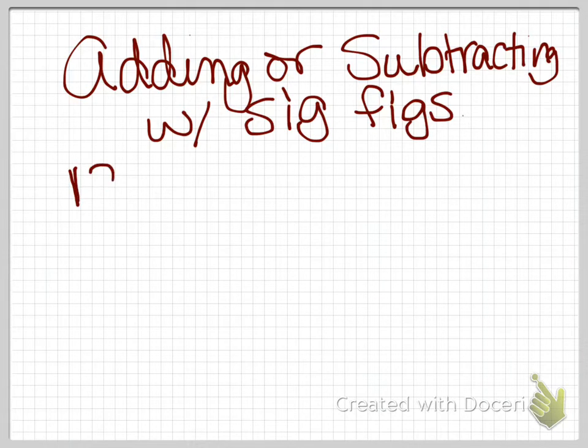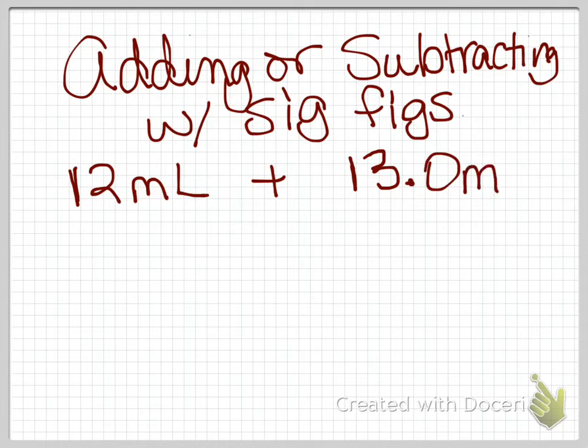So let's take our two measurements that I just put out there for you. The first one was 12 milliliters because our graduated cylinder wasn't very good. It didn't have very many divisions on there, graduations on there. And we're going to add to it our better graduated cylinder, or more precise graduated cylinder, and it had 13.0 milliliters. So we're going to add these two together.